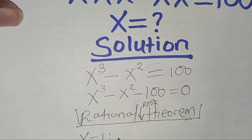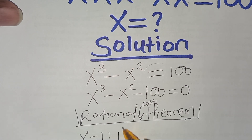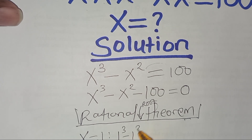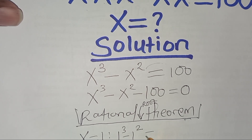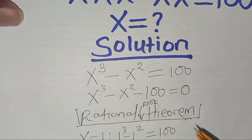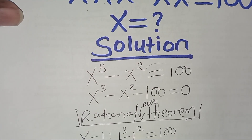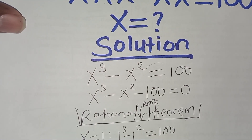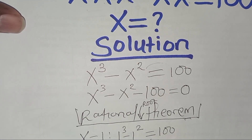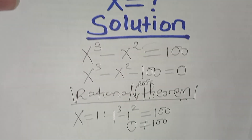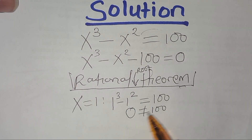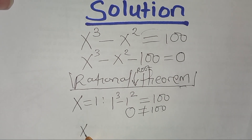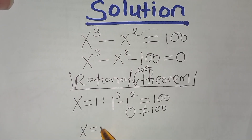So we'll have 1 cubed, subtract 1 squared, and check if this equals 100. We find that 1 cubed is 1, minus 1 squared is 1, so 1 minus 1 equals 0, which is not equal to 100. So 0 is not equal to 100.